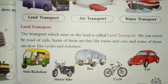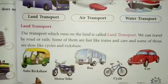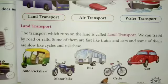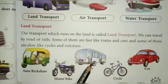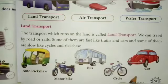Okay students, you see all these vehicles around us — auto rickshaw, motorbike, bus, cycle, car. You also cycle on your cycle. I think you also sit in the bus, motorbike, auto rickshaw, and car.